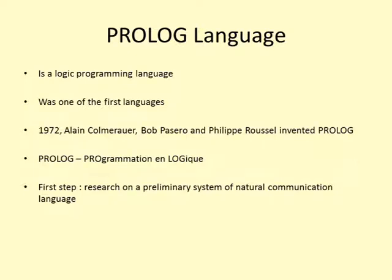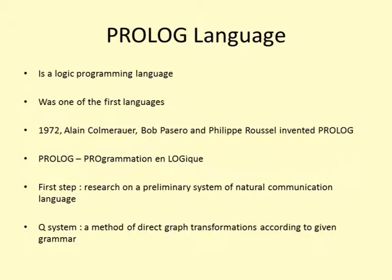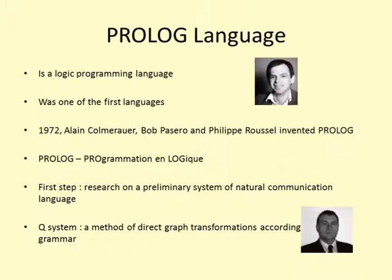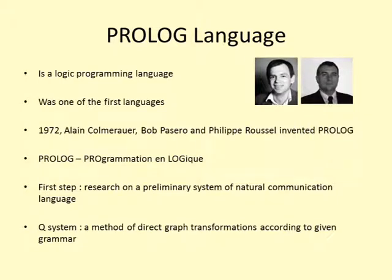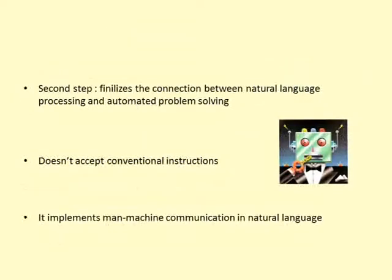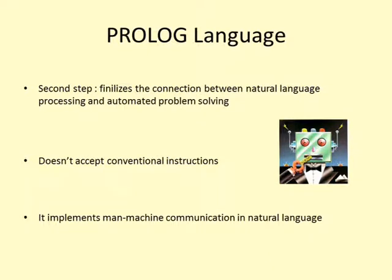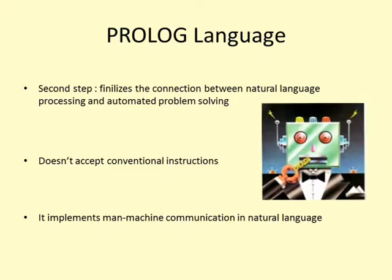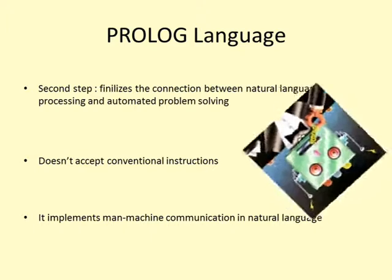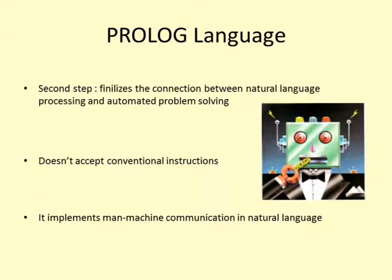The first step in the development of Prolog was research on a preliminary system of natural communication language. This language consisted of connecting logical formulas and French sentences with 50 rules written in Q-system. Q-system is a method of direct graph transformation according to given grammar rules. The second step, in 1972, finalized the connection between natural language processing and automated problem solving. Prolog does not accept conventional instructions but demands that the programmer specify tasks in logic, implementing man-machine communication in natural language with a question-answering system. The original idea of Prolog was to program with formal arithmetic logic as a total solution, not with a set of instructions.